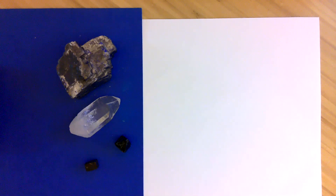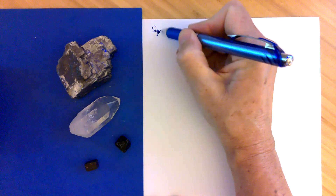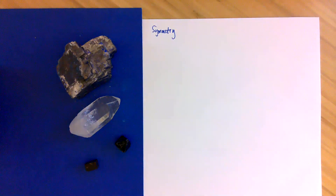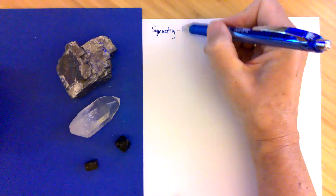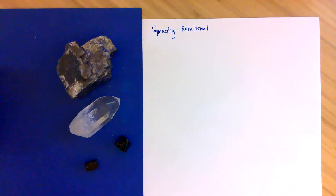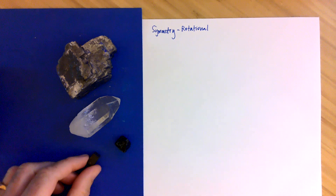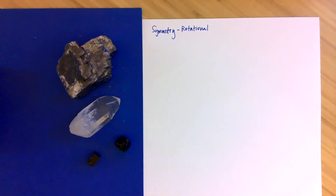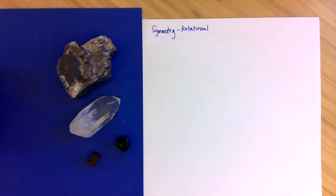Hi folks, today we're going to talk about symmetry — specifically rotational symmetry. You can see a few minerals sitting here, and these minerals have different shapes or morphologies. Those shapes are made up of different faces, and we can use the arrangement of the faces — the symmetry at which the faces exist — to characterize crystal forms and relationships.